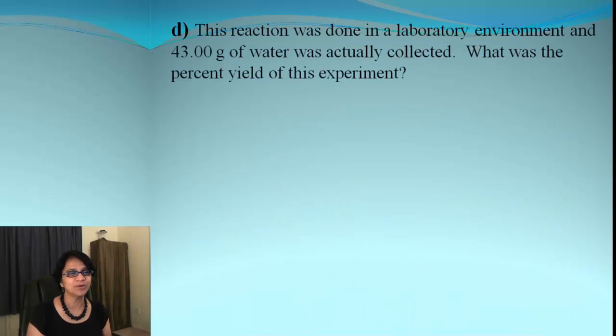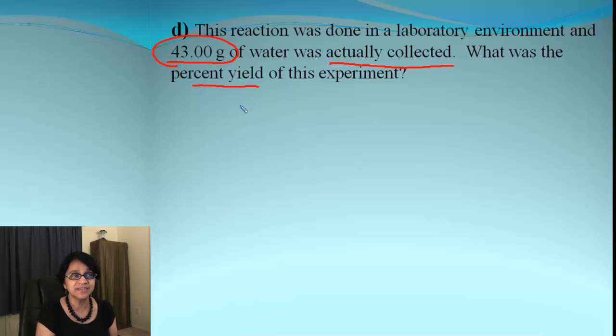There is one more thing to complete, and that is the percent yield. If we do the reaction in real life, which they did here, actually water collected was only 43 grams. So we have to find out the percent yield of this reaction. Let's go back to our very first theoretical yield. The theoretical yield which we obtained by finding out that oxygen was the limiting reactant was how much? That was 45.05 grams. How much is the actual one? Actual yield is 43 grams.